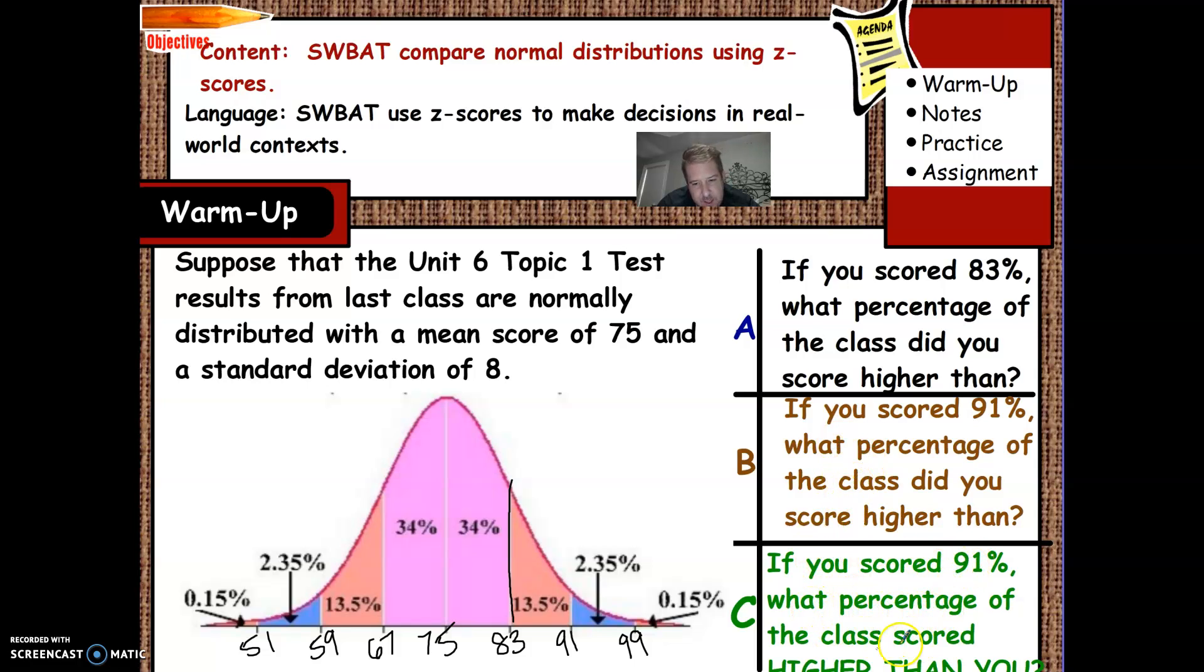If you scored 91%, what percentage of the class scored higher than you? Okay, so 91% would be right here. That would be everybody else, which is over here, which would be 2.5% of the people.